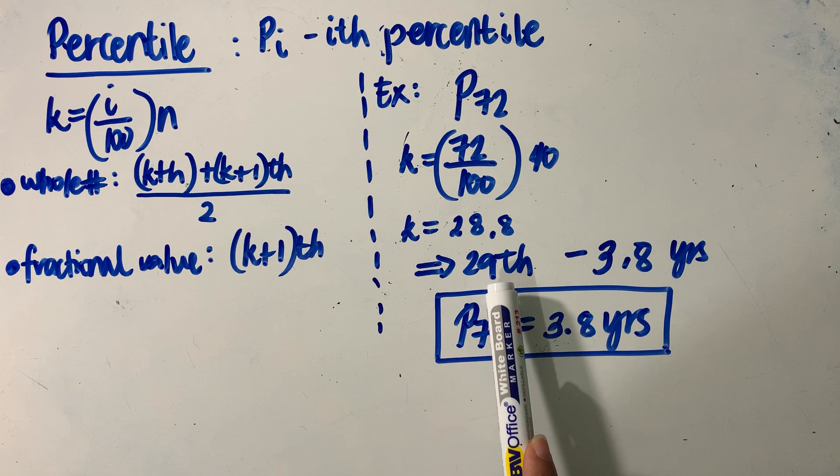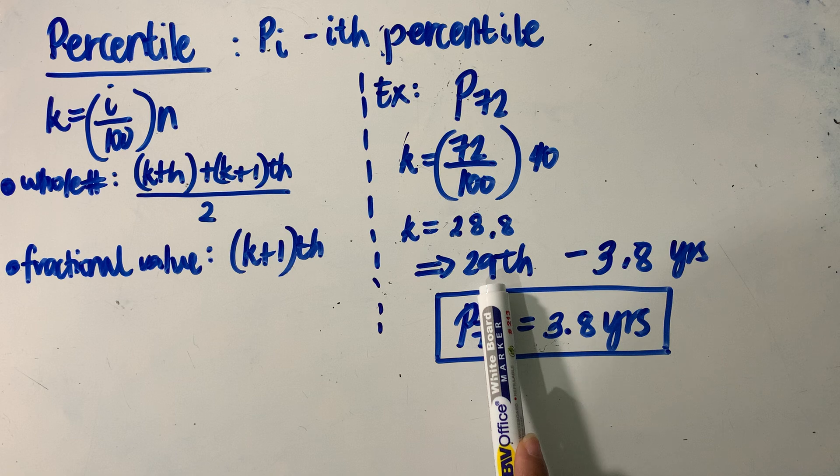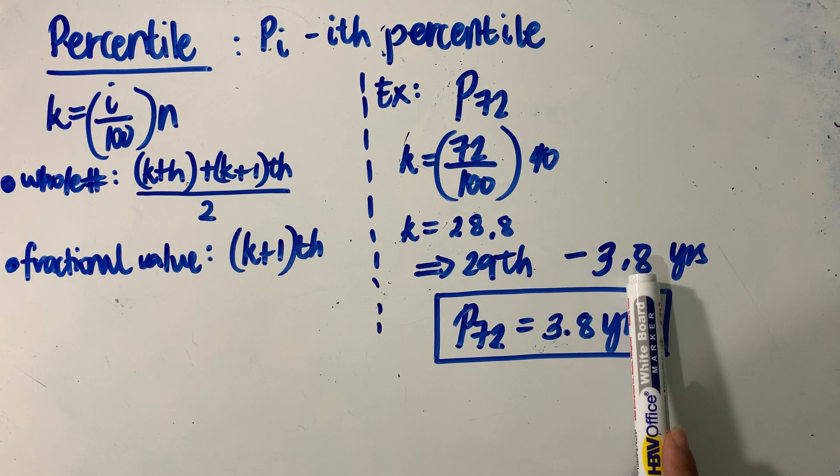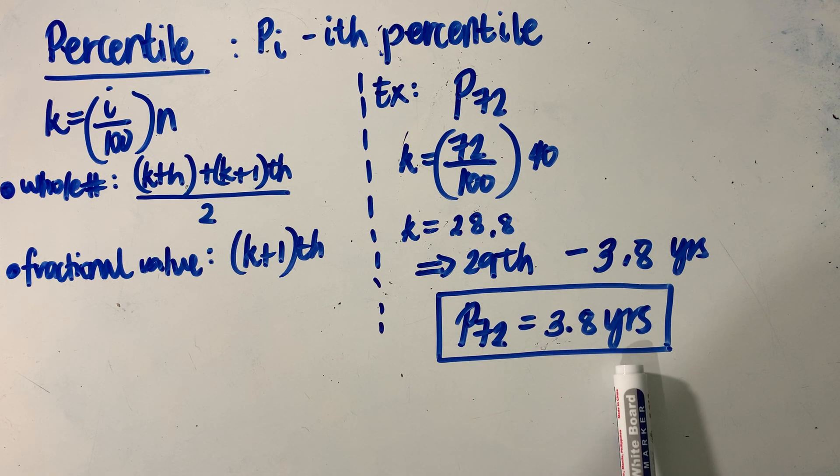By inspection, in the data set we have, the 29th value in our distribution equals 3.8. So putting it in the context of our data values in the given distribution, the 72nd percentile equals 3.8 years.